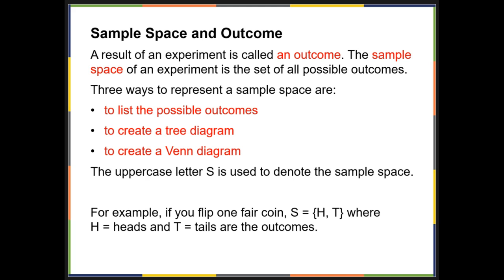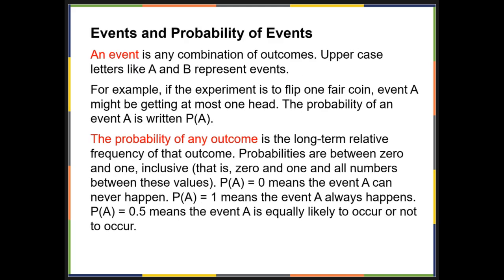An event is any combination of outcomes. We use uppercase letters to represent events. So if the experiment is to flip a fair coin, event A might be getting at most one head. The probability of an event A is written as P(A).